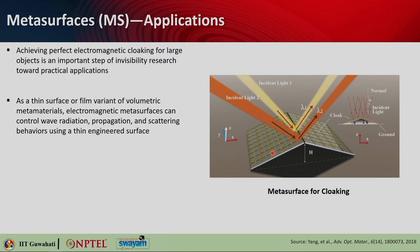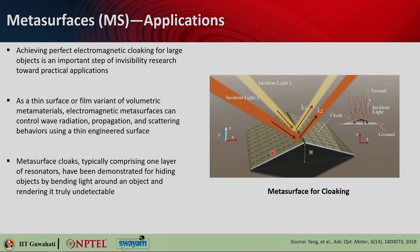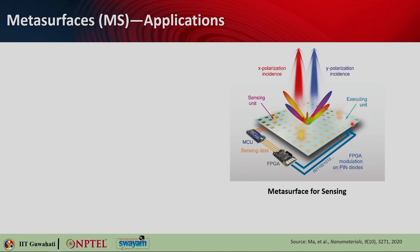Metasurface cloaks typically comprising one layer of resonators have been demonstrated for hiding objects — either by bending light around the object or by ensuring the reflection profile looks exactly as if light is coming from a flat surface. Whatever is placed below this metasurface becomes undetectable, since the reflection spectrum looks identical to that of a flat surface.